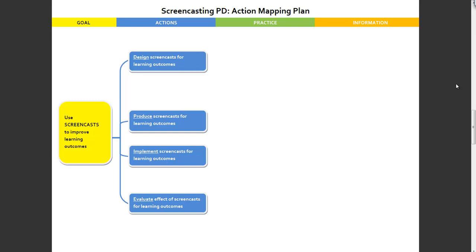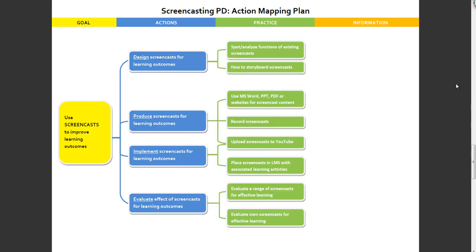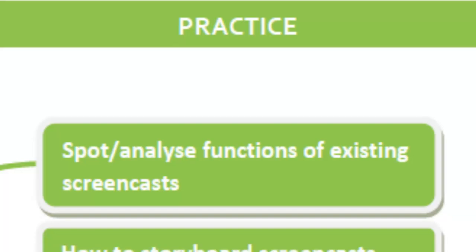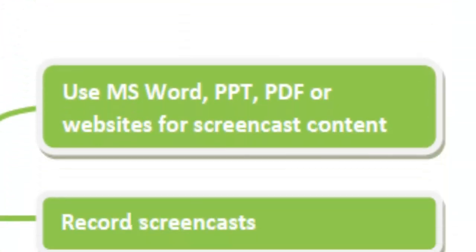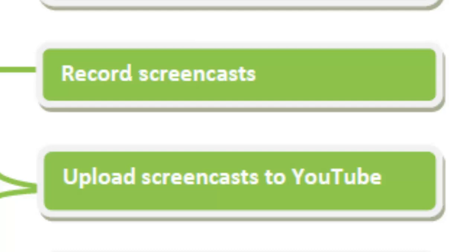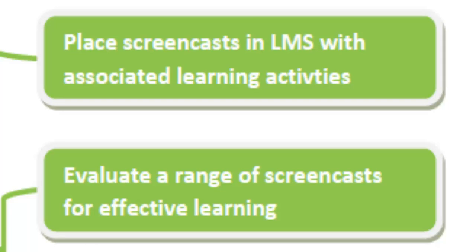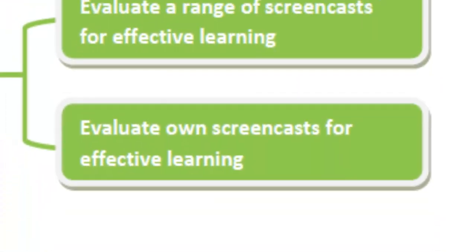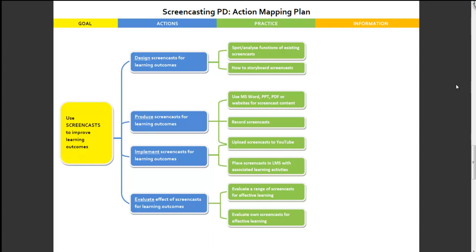As you can see, there are four broad actions associated with using screencasts to improve learning outcomes, and there are a variety of sub-actions associated with all four of those. For practice, I came up with a variety of things that teachers could be doing - practice activities which simulate the process but also put it into practice. So these are in some ways practice and in some ways actions, and that's kind of what happens when you're using action mapping at this broader level.